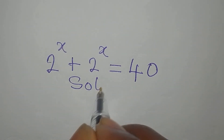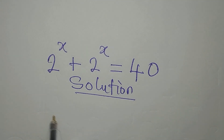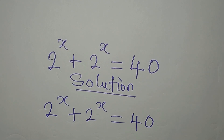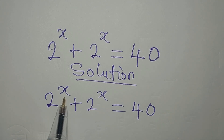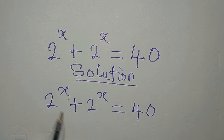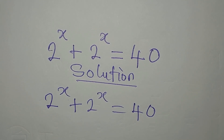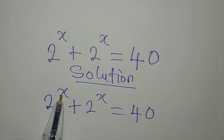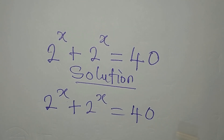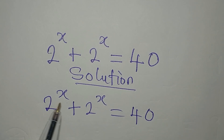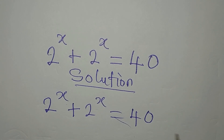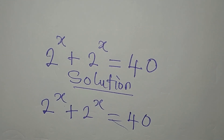Hello everyone, let's provide the solution to this problem. This is simple, but the question is: is there any value of x we can easily think of that will satisfy this equation? If you put 1, 2, or 3 it won't give us 40. If you put 3, you have 8 plus 8. If you put 4, it's 16 plus 16, which is 32. If you put 5, 2 to the power of 5 is 32, so 32 plus 32 is 64 — already more than 40.